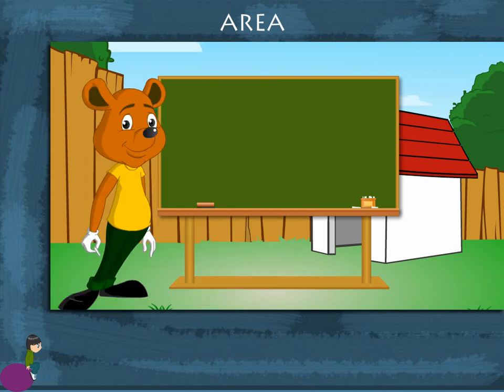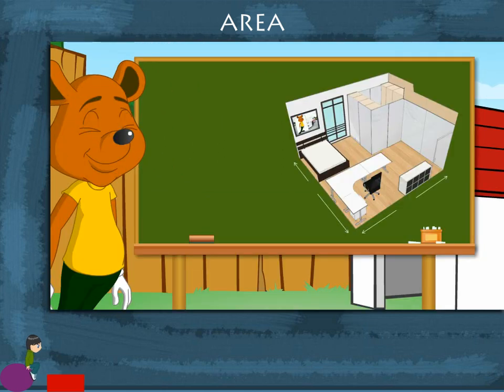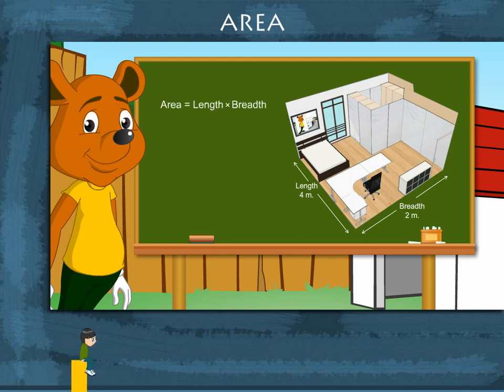Area. Toby also wants to find the area of his room. He knows that area of the room is equal to length into breadth. So, he writes area A is equal to 4 meter into 2 meter, which is equal to 8 square meter.